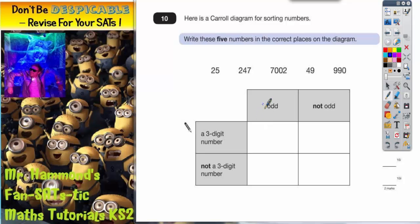Now what we're going to realize here is we've got two columns and two rows. So anything that's in this column must be odd. Anything that's in this column must not be odd. In other words, if it's not odd, it's got to be even, isn't it? In that column.